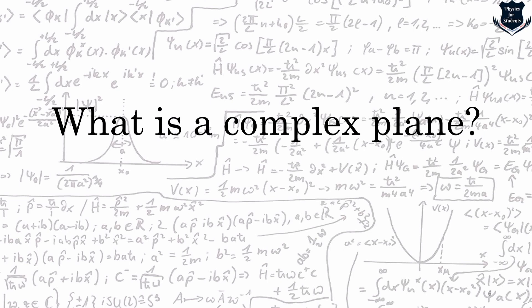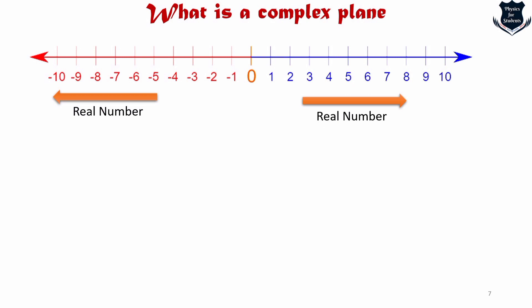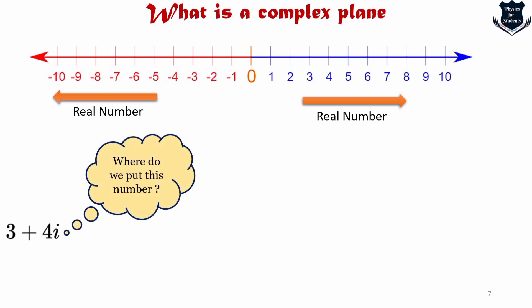Now we come to a very important concept: the complex plane. The edifice of quantum physics is built on it. Some wave equations and further areas of quantum physics rest on the complex plane. Visualization is more important than equations. Consider a number line — the real number line goes left and right. But if we get a complex number like 3 plus 4i, where do we put it on a real number line?